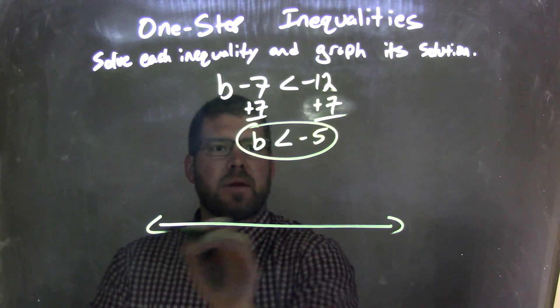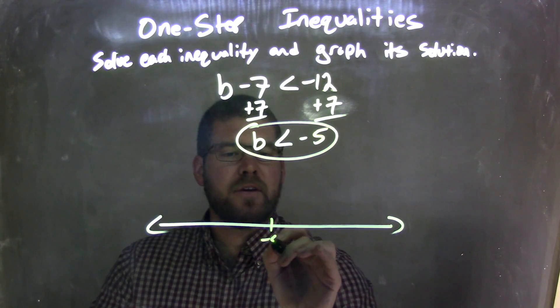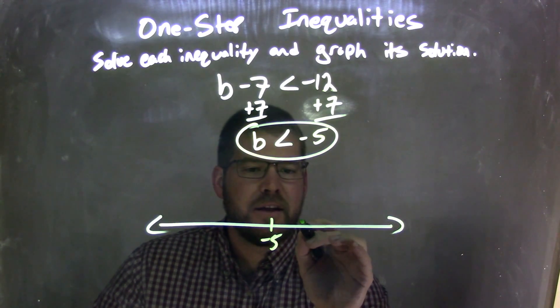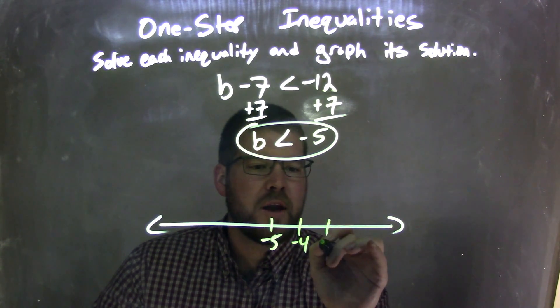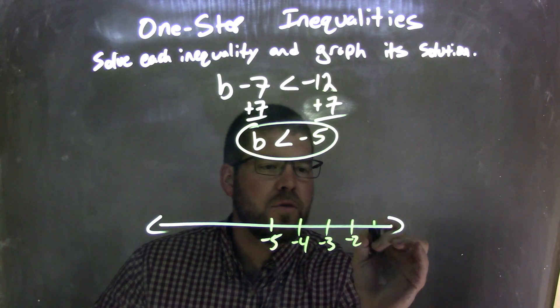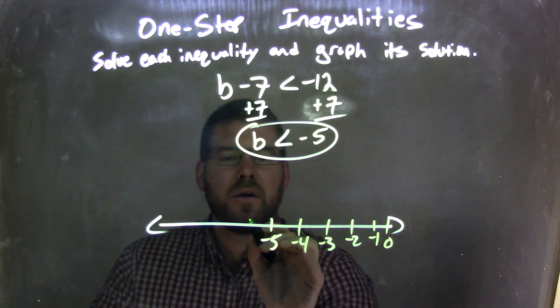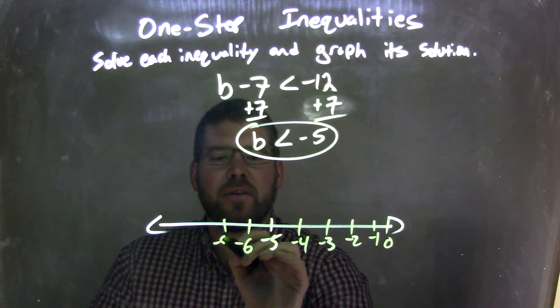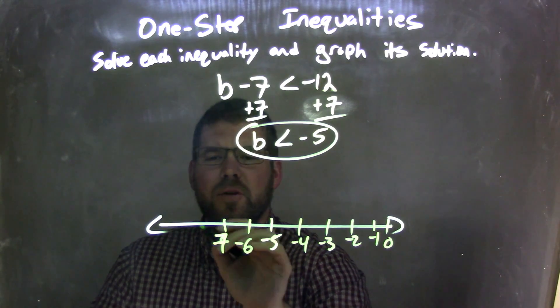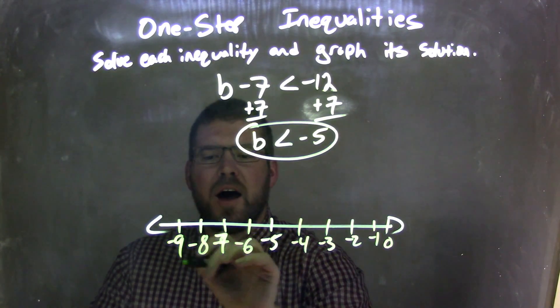So if I graph this, I'm going to have negative 5 here, negative 4, negative 3, negative 2, negative 1, 0, negative 6, negative 7, negative 8, negative 9.